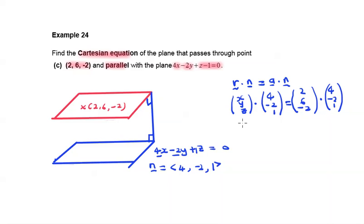This equals 4x-2y plus z equals to 2 times 4, 6 times negative 2, negative 12 minus 2, that is equal to negative 6 for the right-hand side. So 4x minus 2y plus z equals negative 6. This is the Cartesian equation of this plane.